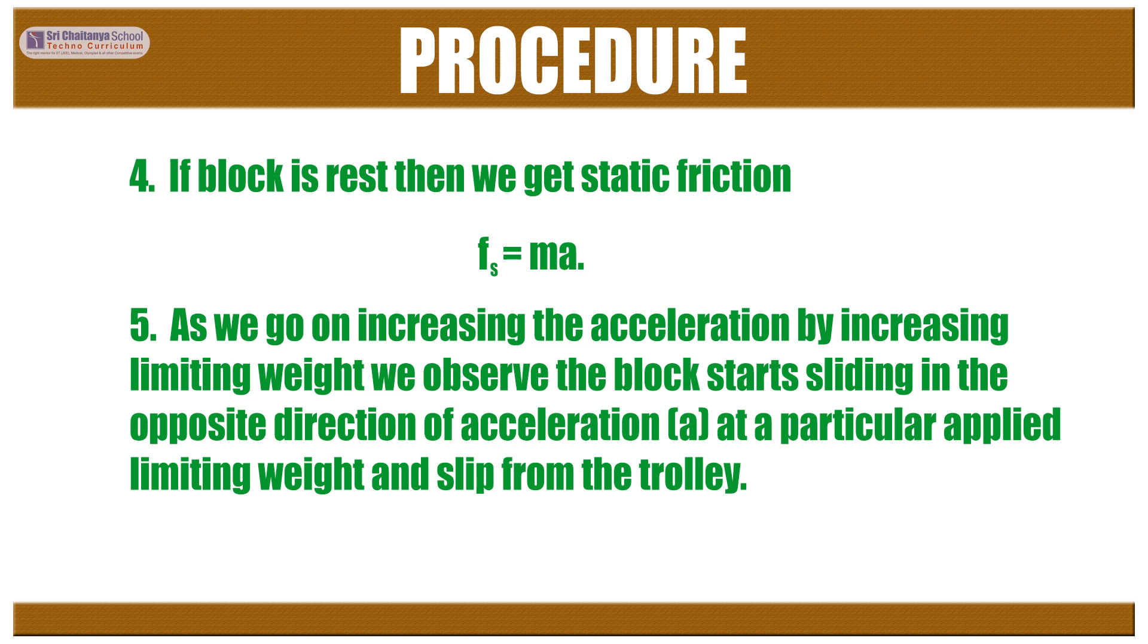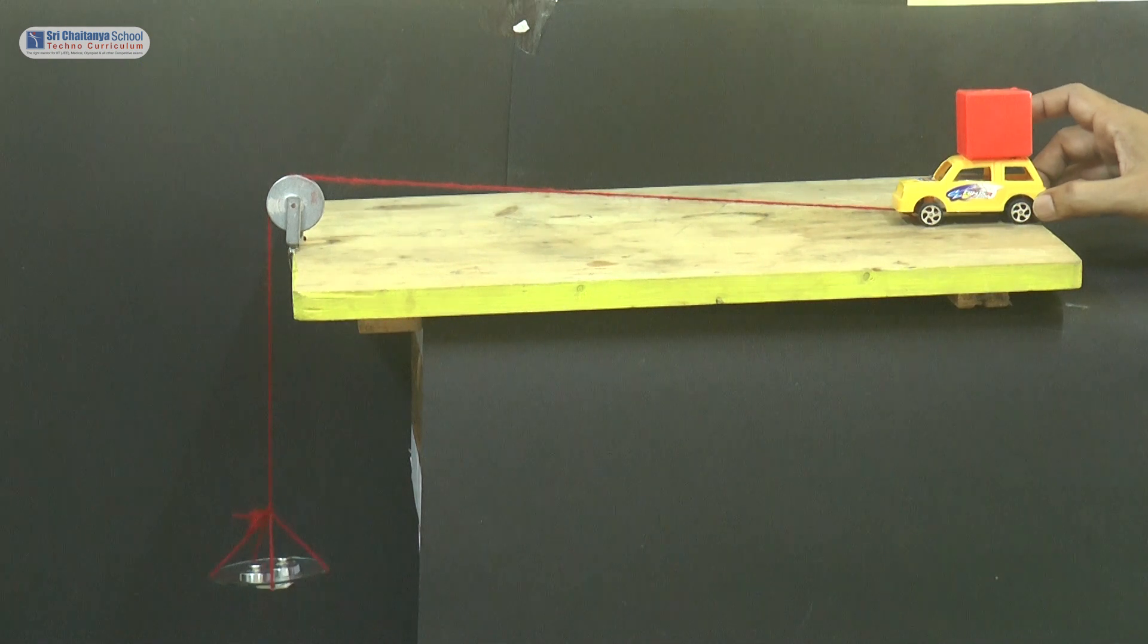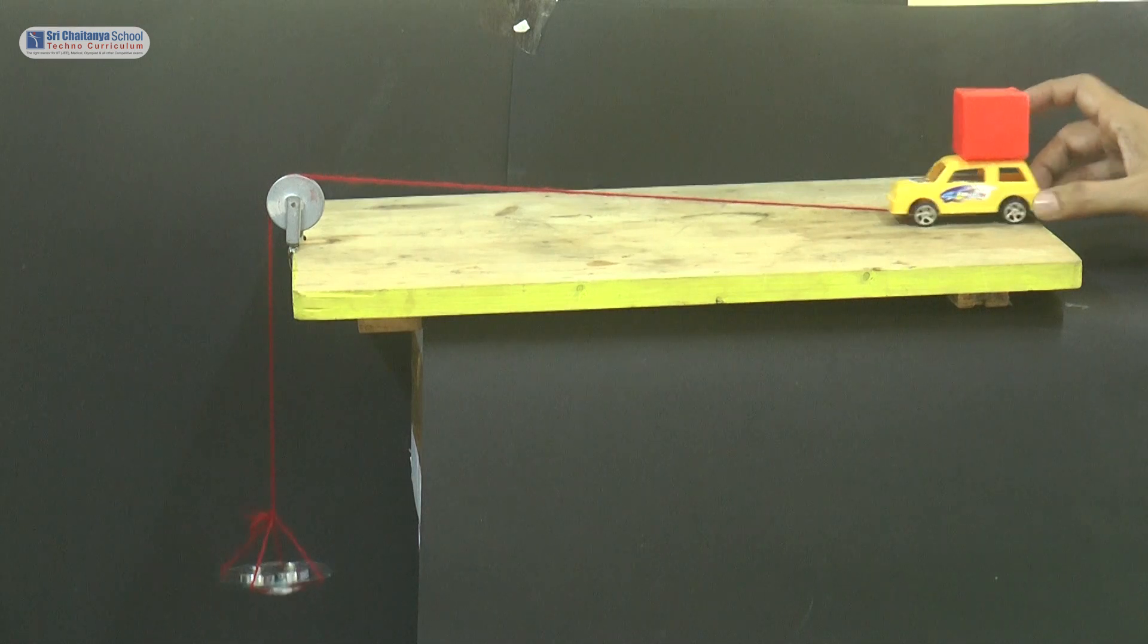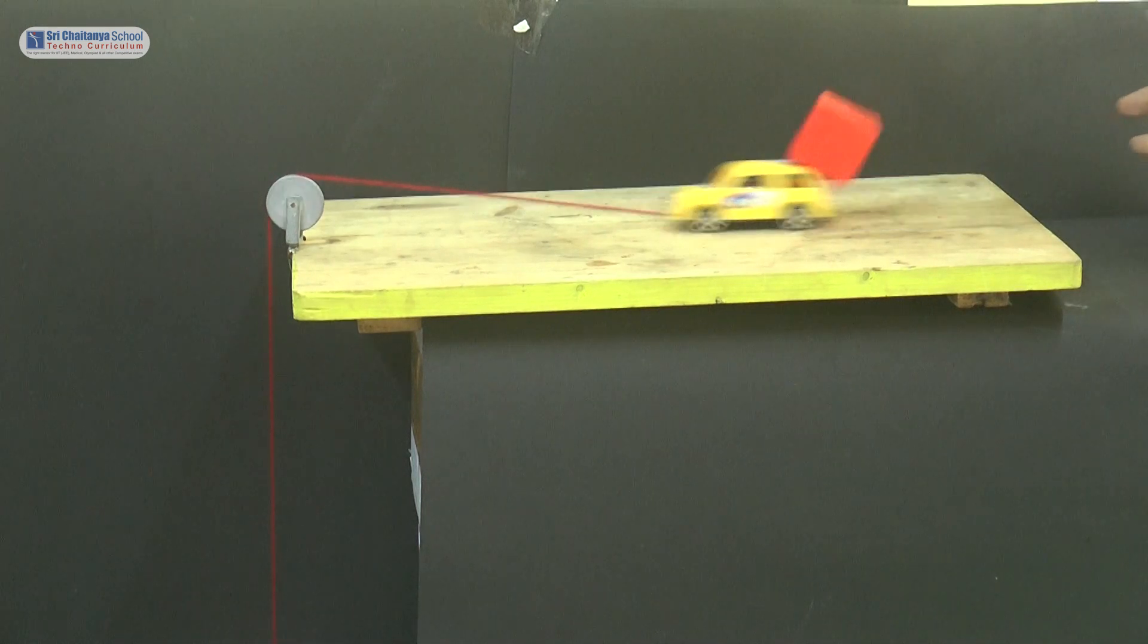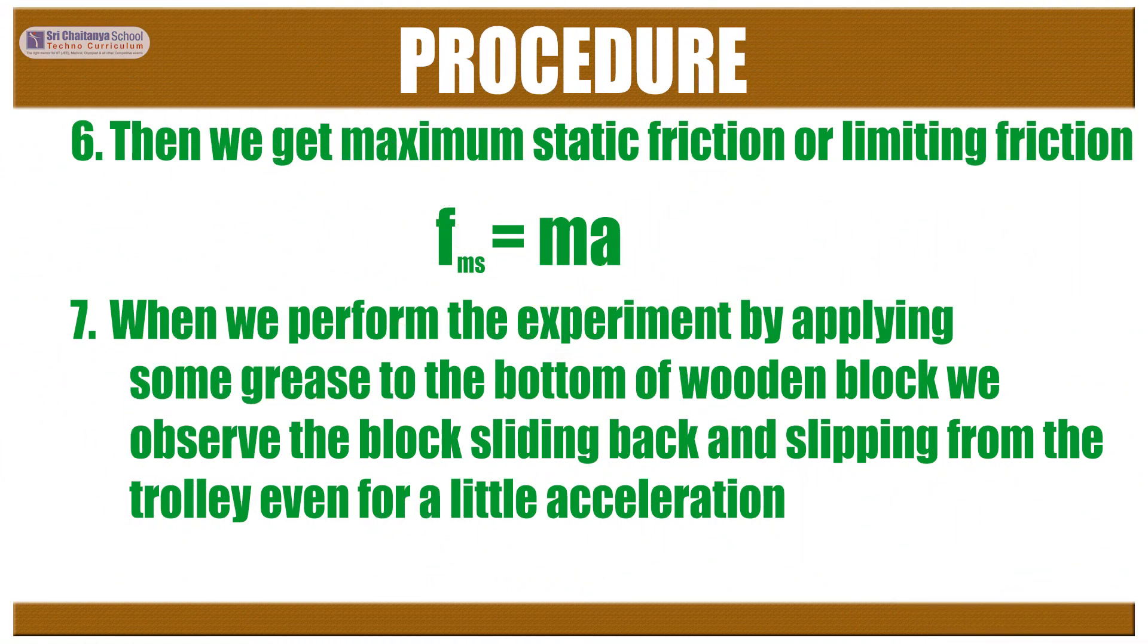As we go on increasing the acceleration by increasing limiting weight we observe the block starts sliding in the opposite direction of acceleration. Let the particular applied limiting weight slip from the trolley. Then we get maximum static friction or limiting friction Fms equals Ma.